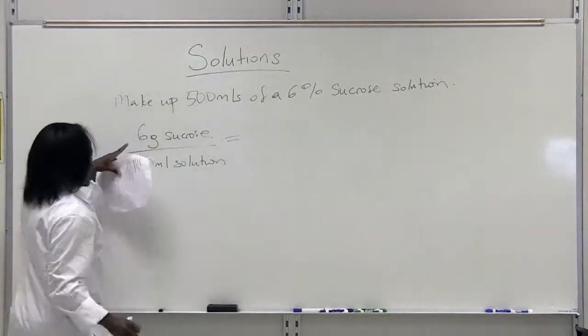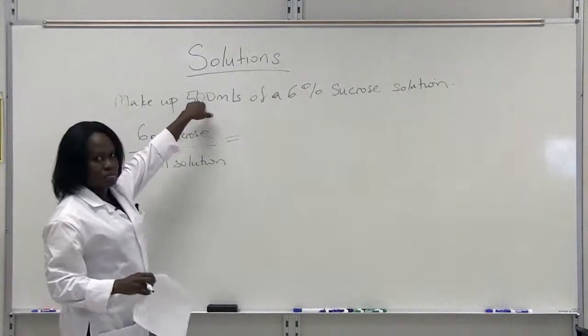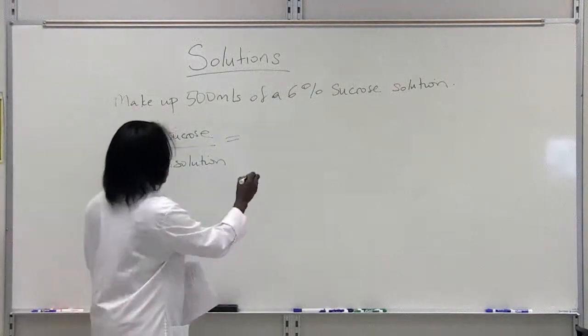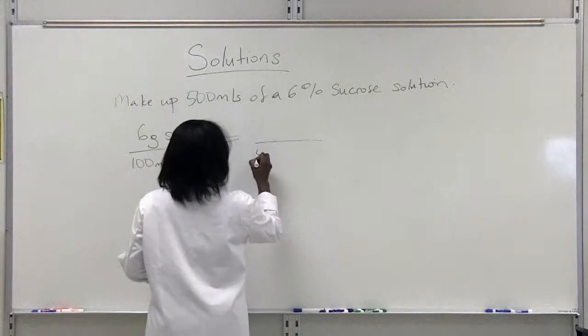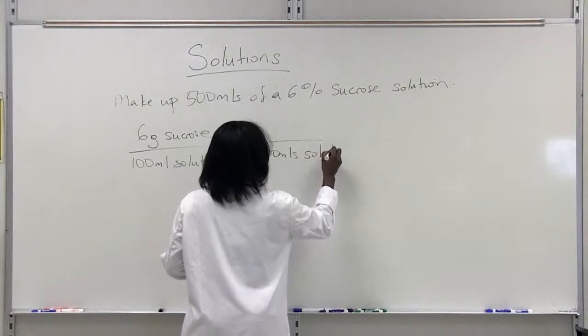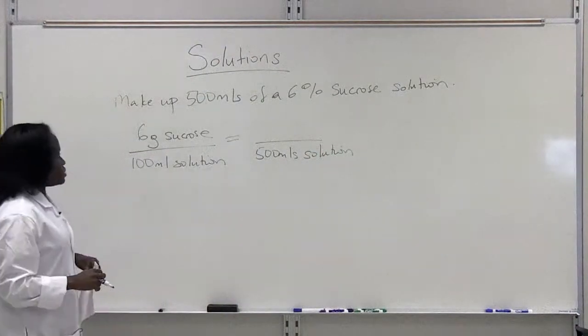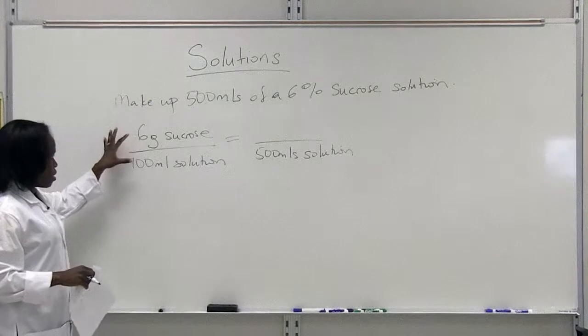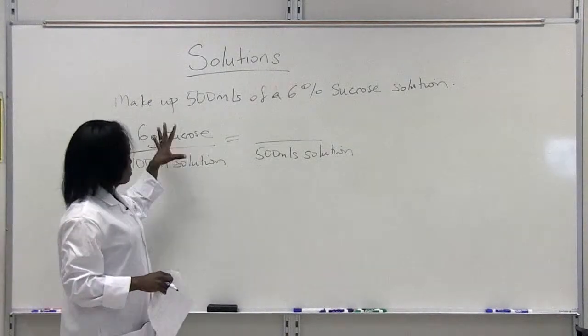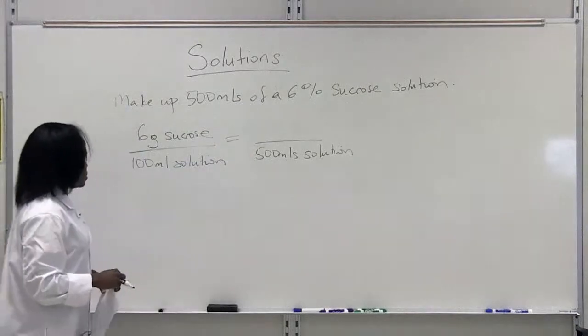We know that, but we're required to make 500 mls of this solution. We want to make sure that the proportion of solute to solvent is going to be the same on both sides of our equation.